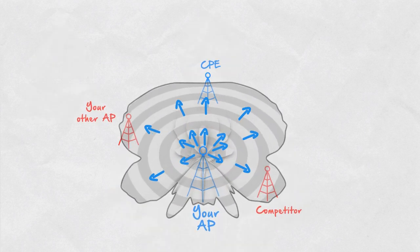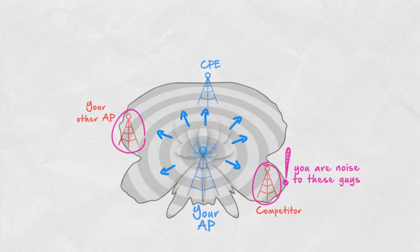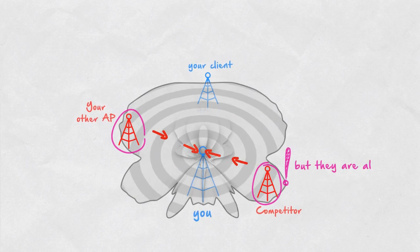Antenna side lobes are extremely harmful in fixed wireless networks. Any signals radiated in unwanted directions is noise for any other radio in the area, and vice versa, any signals received from unwanted directions is noise for your own radio.